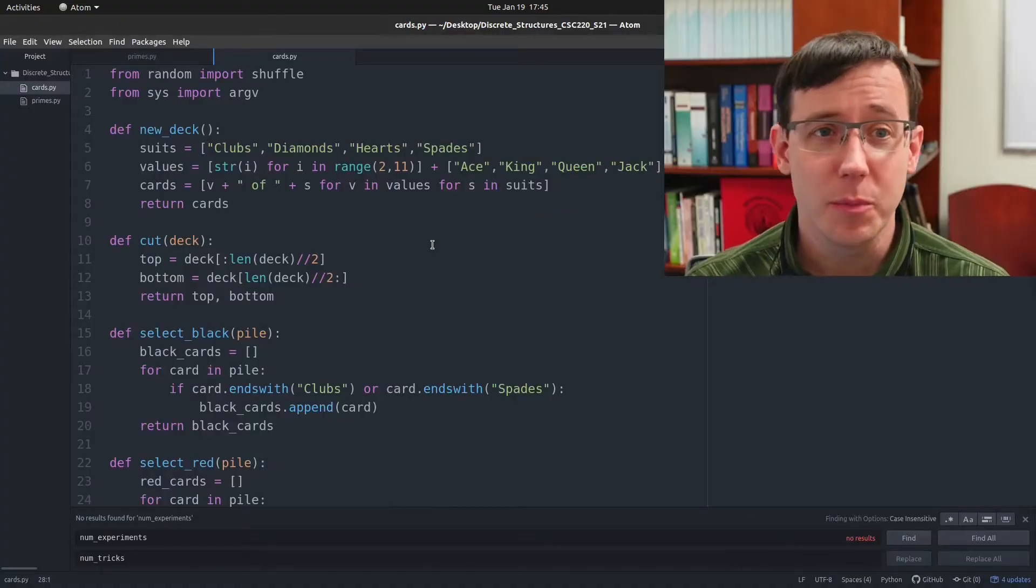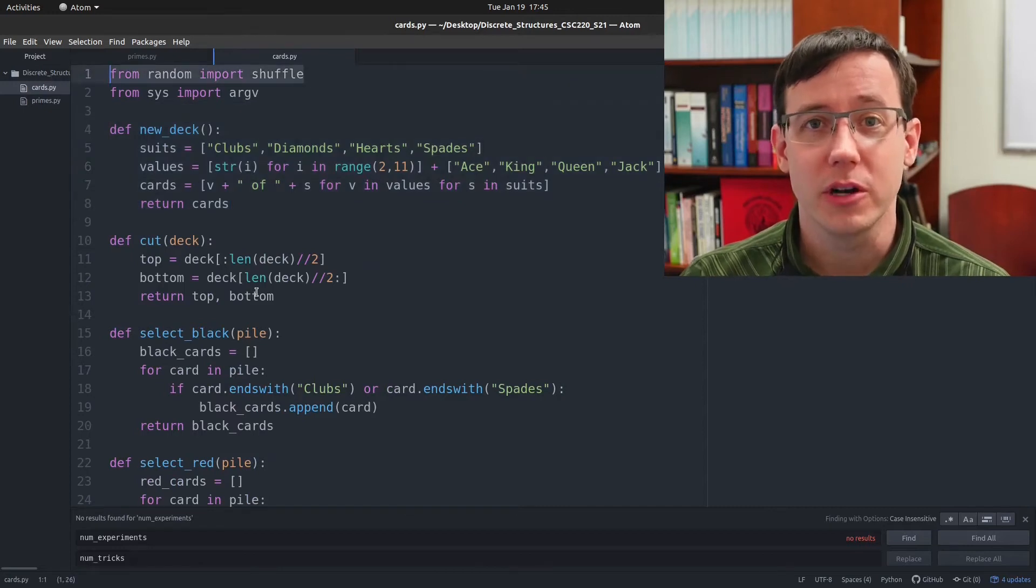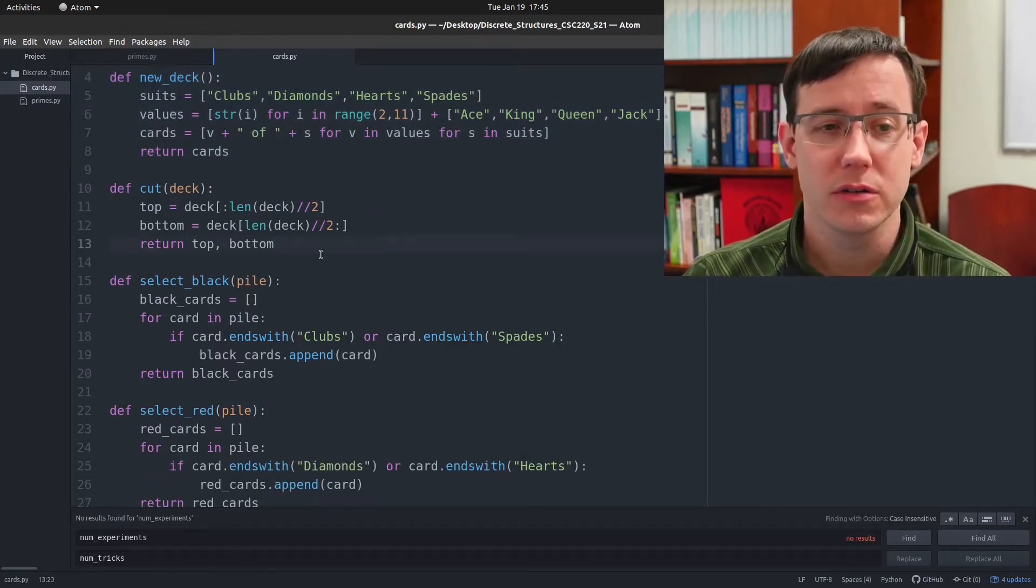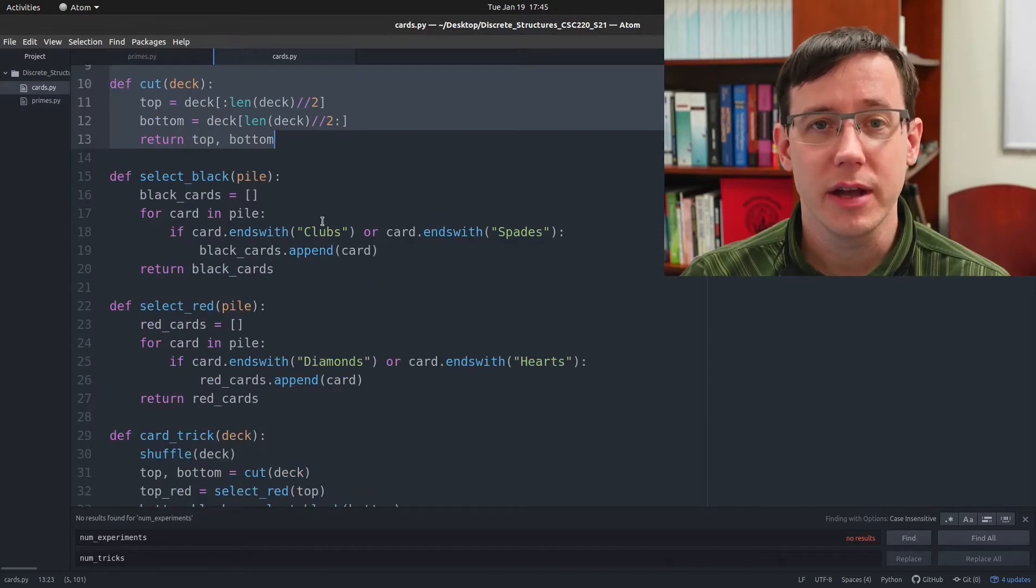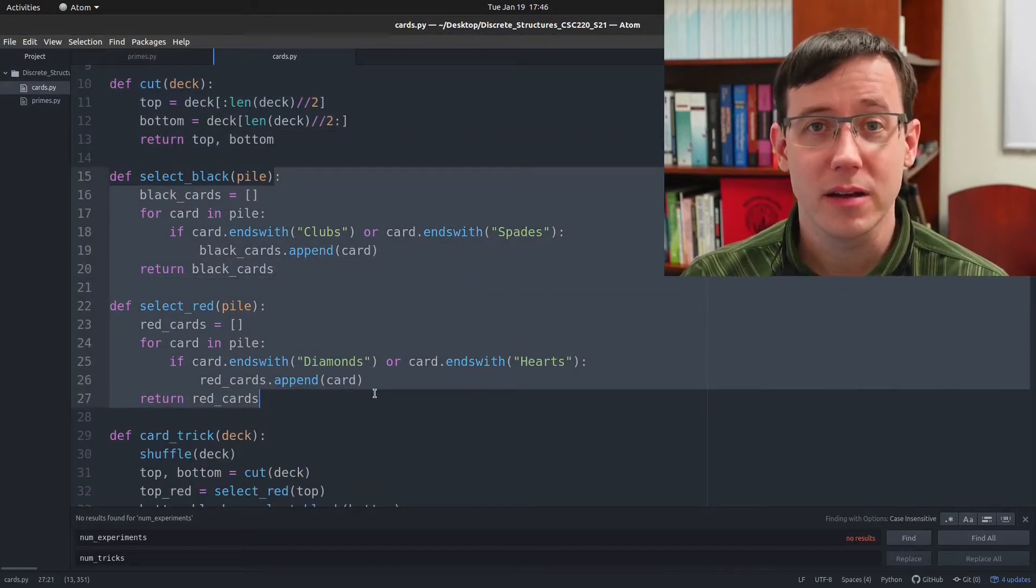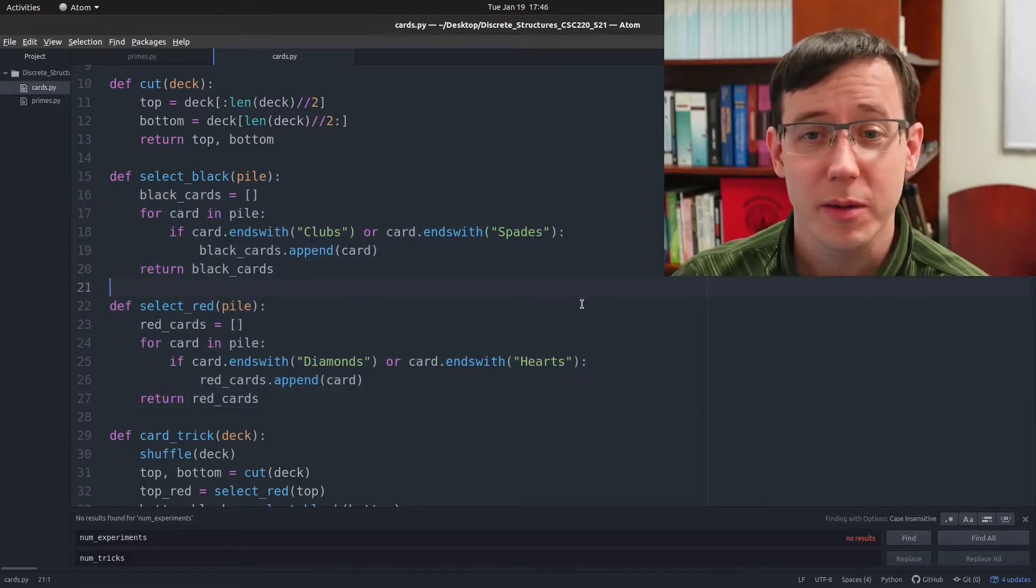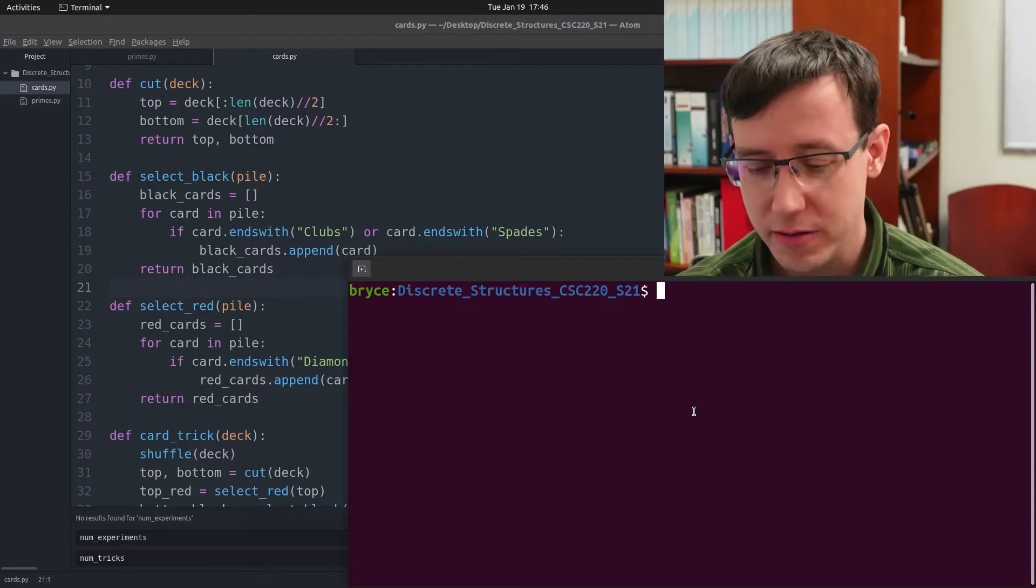Here I've written some Python code that can create a 52 card deck. We've imported a function to shuffle the order of the cards. And then we can cut the deck and count the number of red and black cards in the top and bottom piles respectively. So, we can test out the trick more efficiently by running it here.